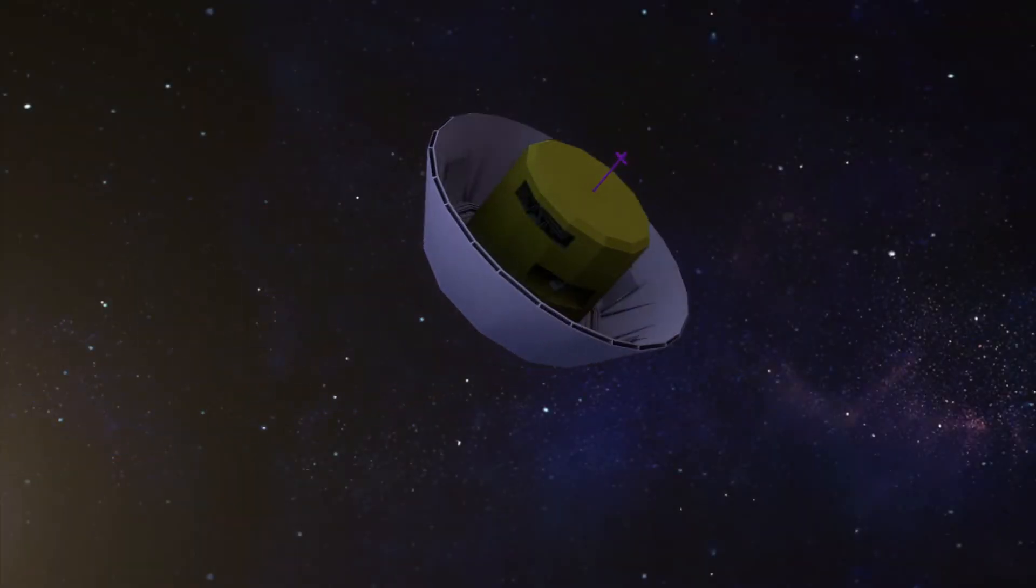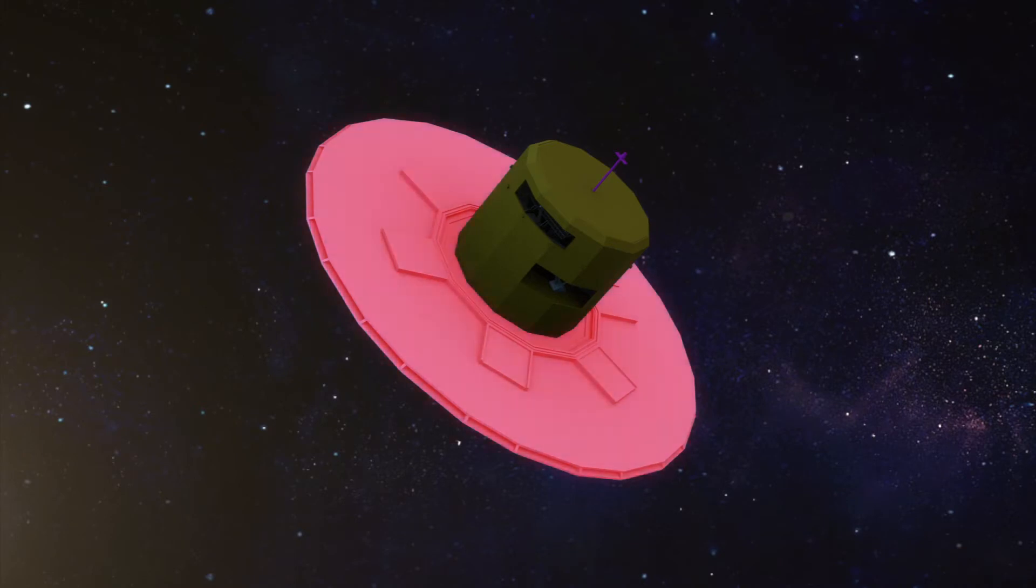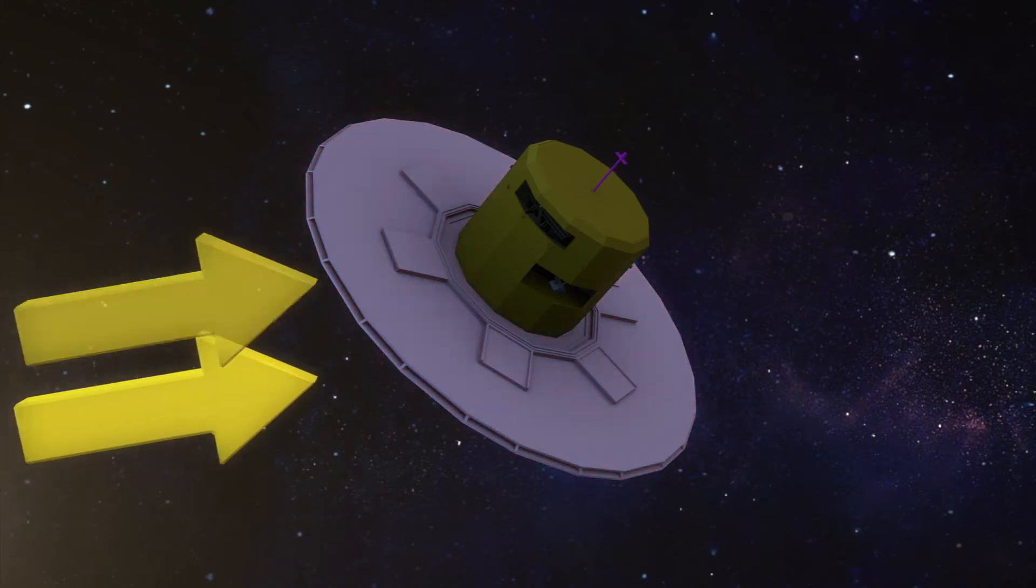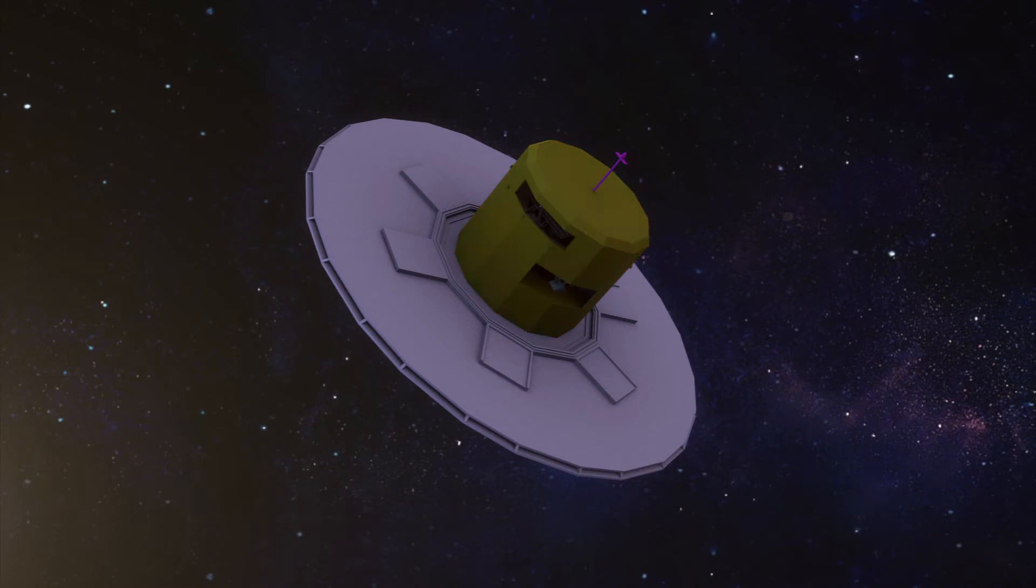Once in orbit, Gaia will unfold a sunshade. Partially covered with solar panels, it will help Gaia generate solar energy while maintaining the temperature of the spacecraft at minus 110 degrees Celsius.